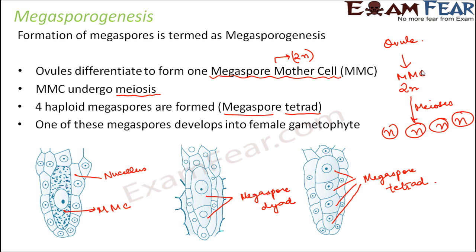Now what happens to these four megaspores which are formed? One of these megaspores develops into the female gametophyte. It is not all the cells — only one of them forms the female gamete. Then what happens to the remaining three megaspores? The other three degenerate — they just die off after some time.